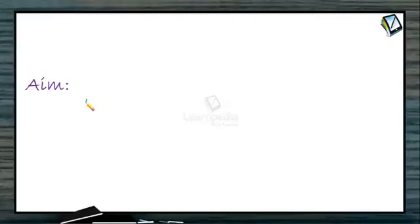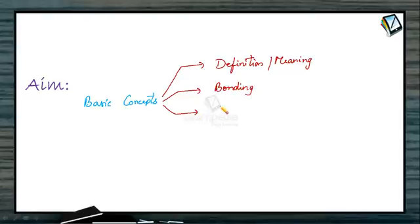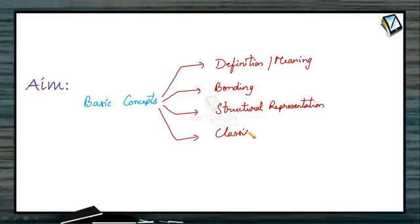In this session, let us discuss about some of the basic concepts of general organic chemistry. In particular, we shall discuss about the definition or meaning of organic chemistry, the bonding in organic compounds, the structural representation of organic compounds, and finally the classification of organic compounds. These are the topics which shall be discussed in this session.